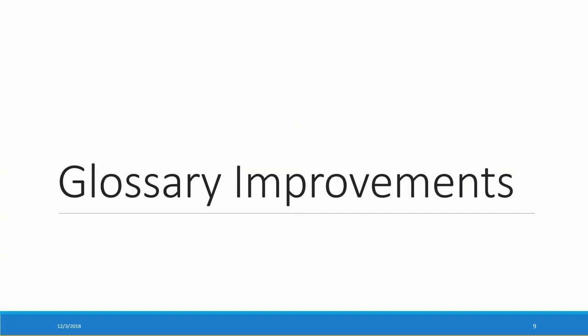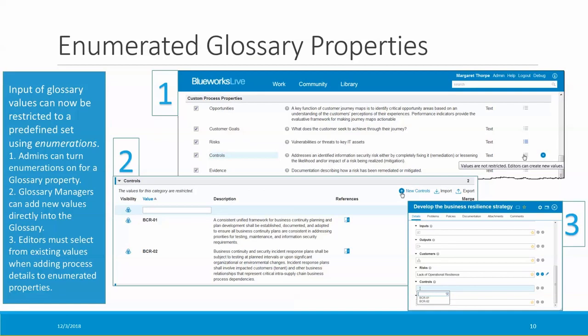Now let's take a look at the glossary improvements. Many of you have asked for the ability to lock down glossary values, so now you can restrict input of glossary values to a set of predefined terms using the new enumerations feature for the system property and for custom text properties. First you need to turn enumerations on on the properties page of the admin console — there's a new column where you can enable and disable enumerations. Once you've turned enumerations on, the only way to add new values is for glossary managers to add them directly in the glossary.